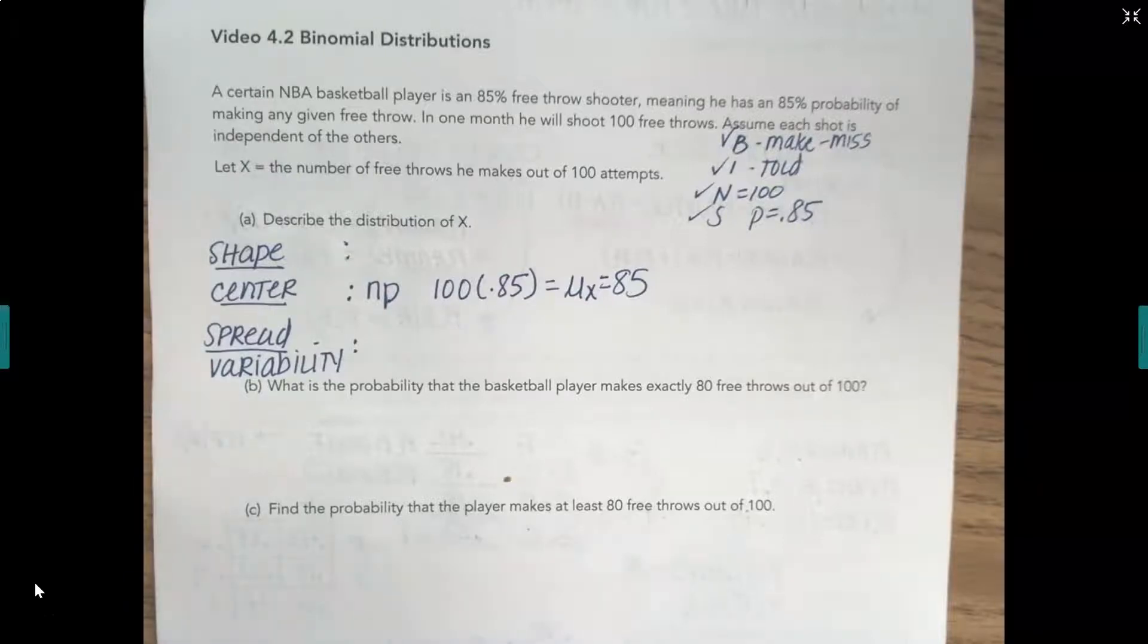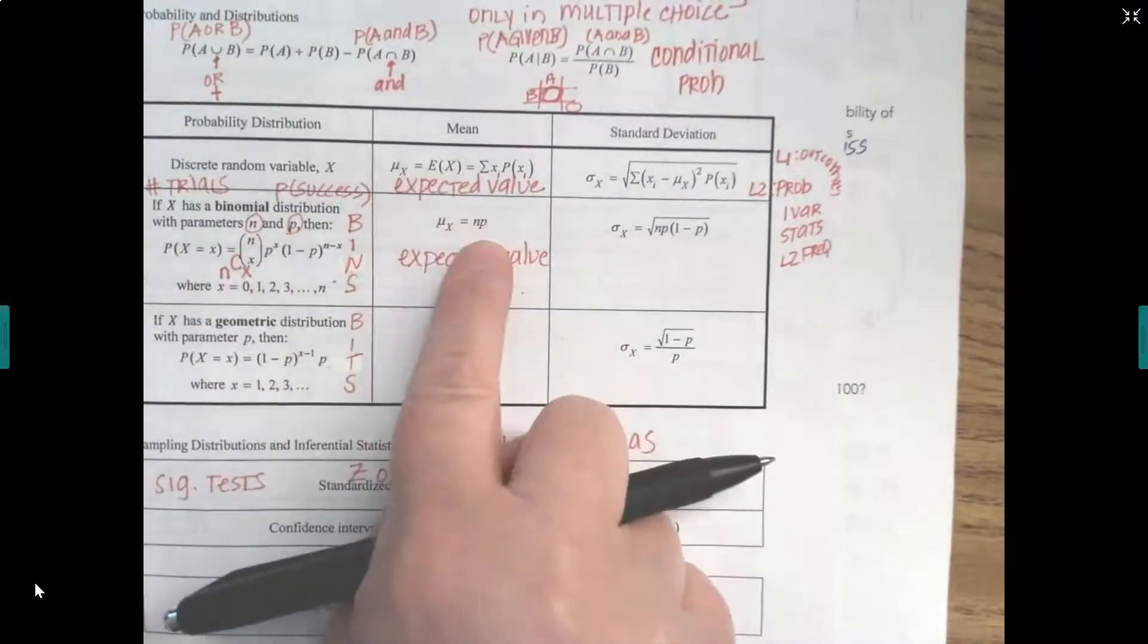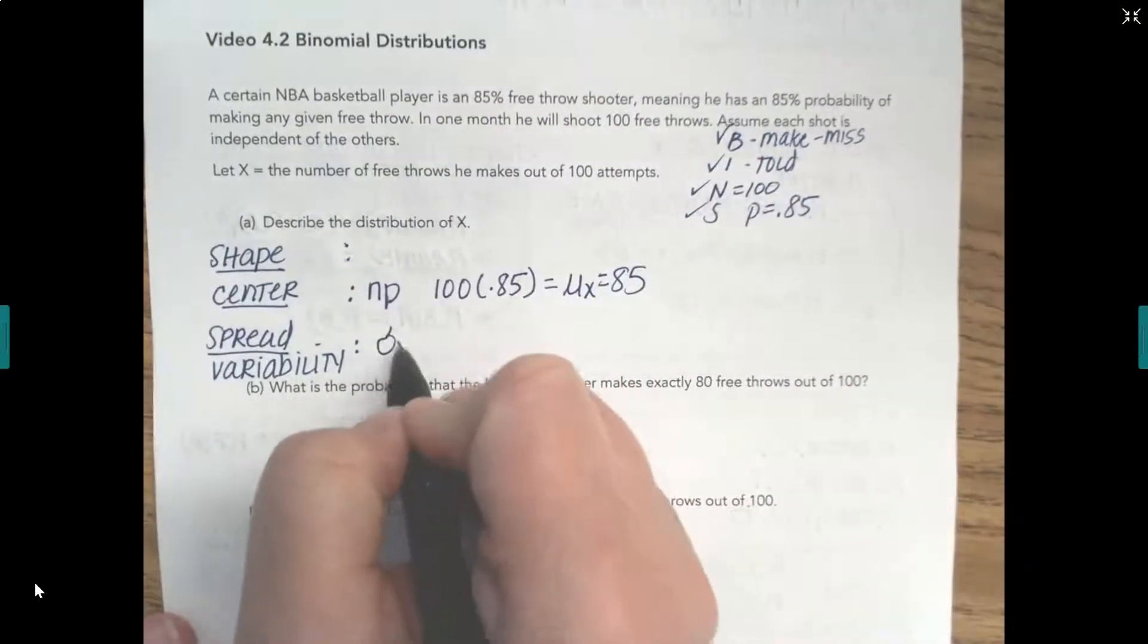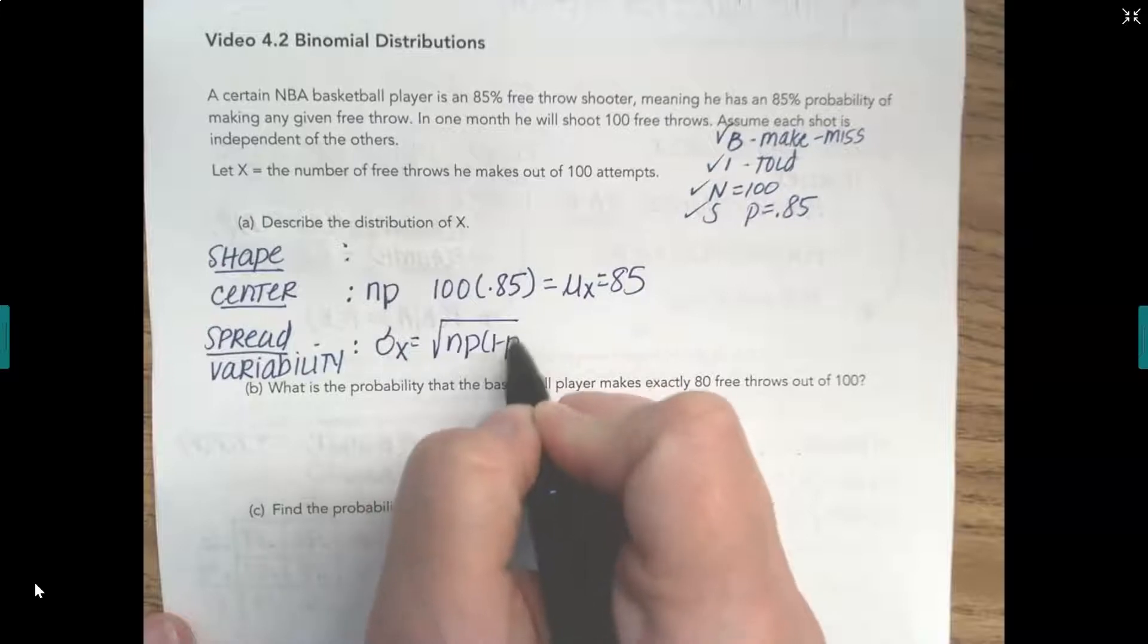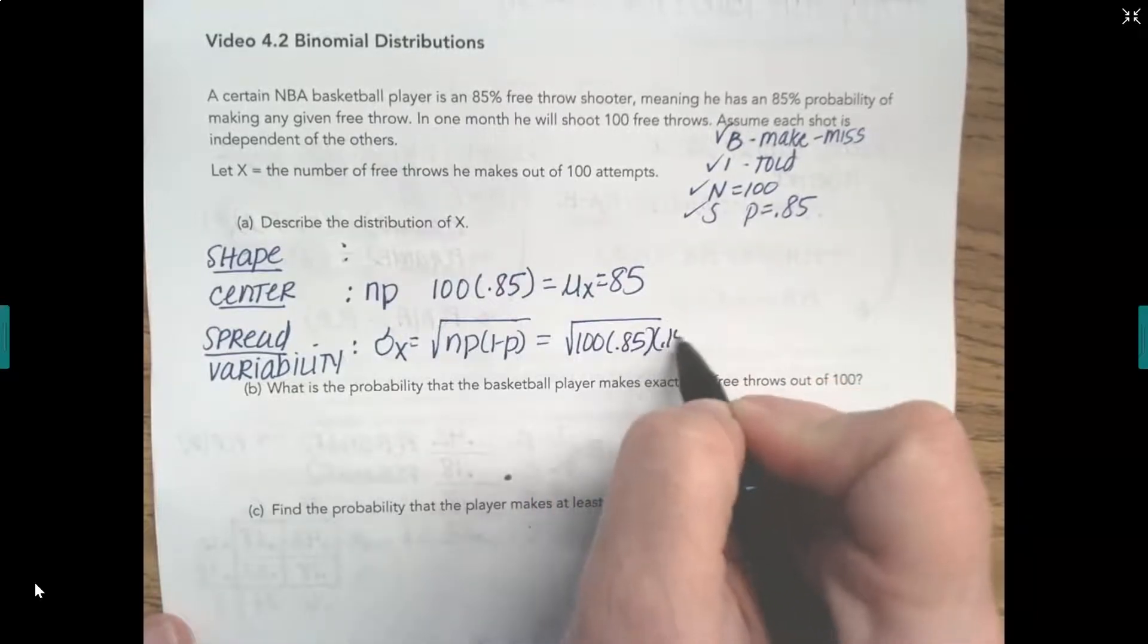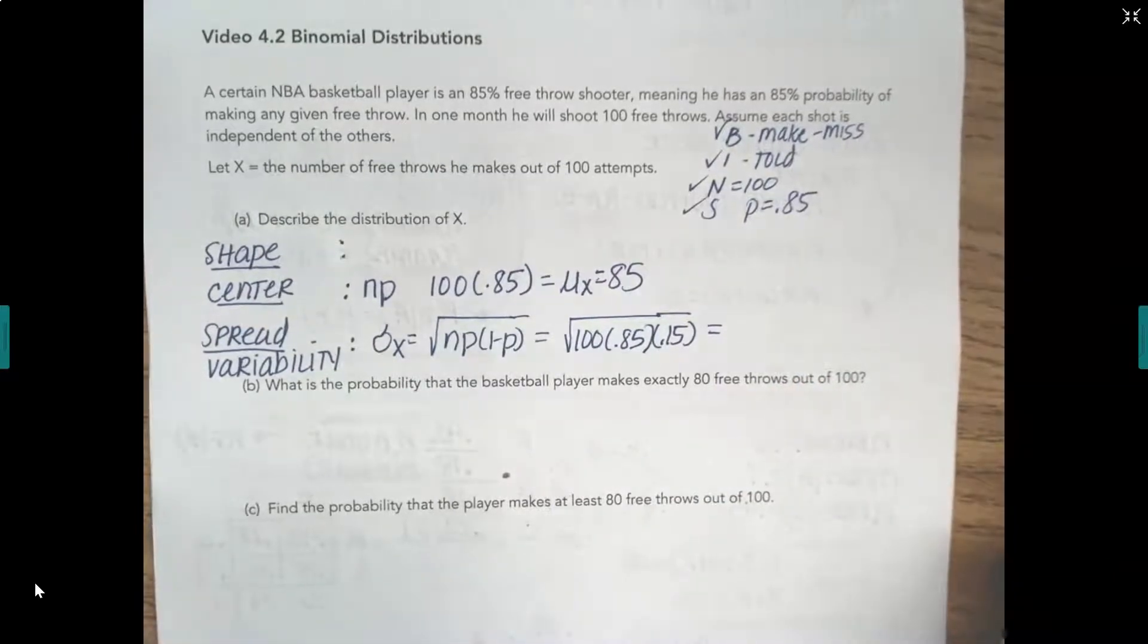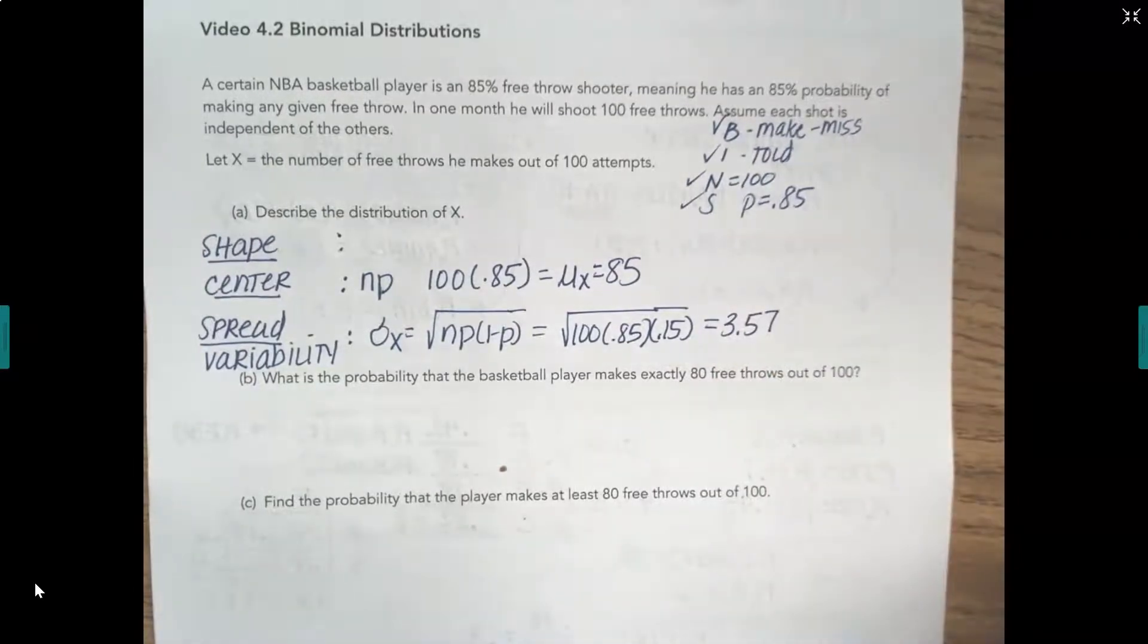The spread, spread or standard deviation. So here we're talking about our binomial. We did our center, here's our spread. We want to use this formula right here. To define the standard deviation of the random variable X, we want N times P times 1 minus P. And take the square root of it, so the square root of 100 times 0.85 times 0.15 will give us a standard deviation of 3.57. So I can talk about the spread now, the variability.